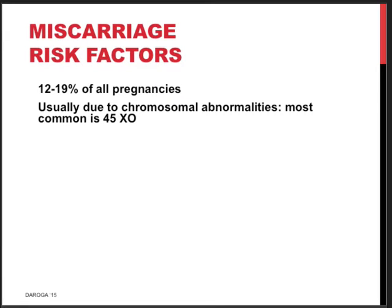Miscarriage is quite common — about 12 to 19% of all pregnancies finish in a miscarriage, and if you include early menstrual miscarriages, this figure is probably higher. The most common cause is a chromosomal abnormality, most commonly monosomy 45X — Turner's syndrome. It is important to explain this to women confronted with early pregnancy loss, as it can be viewed as a natural selection mechanism, which is sometimes a little comforting thought.